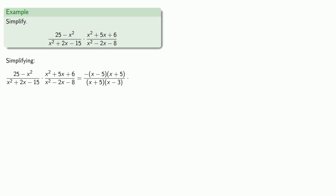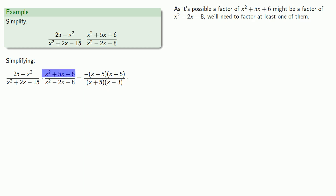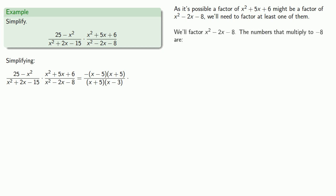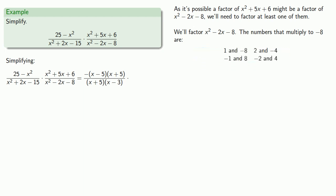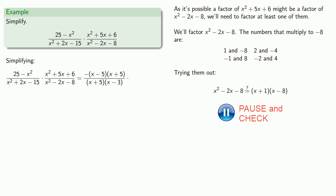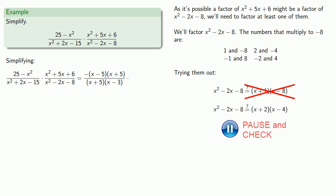Since a factor of x squared plus 5x plus 6 might also be a factor of x squared minus 2x minus 8, we need to factor at least one of them using trial and error. The numbers that multiply to minus 8 are our candidates. We try 1 and negative 8 — nope. We try 2 and negative 4, giving x plus 2 times x minus 4 — and that works. It only takes two tries.